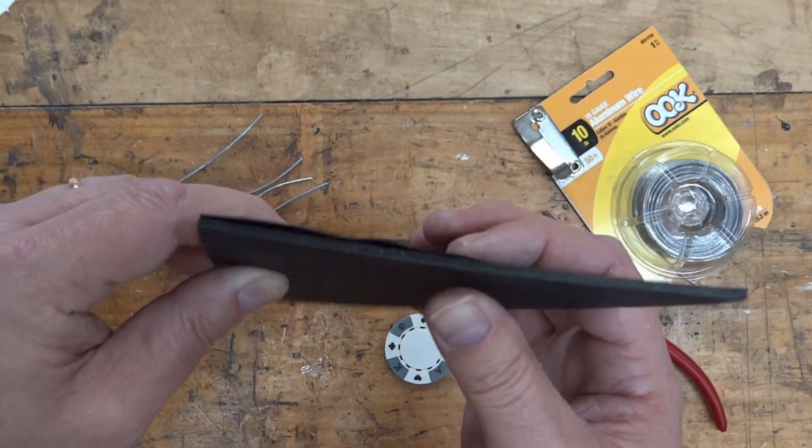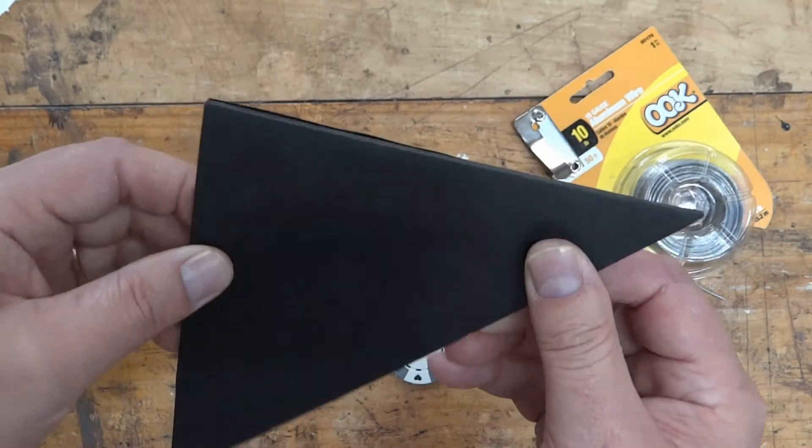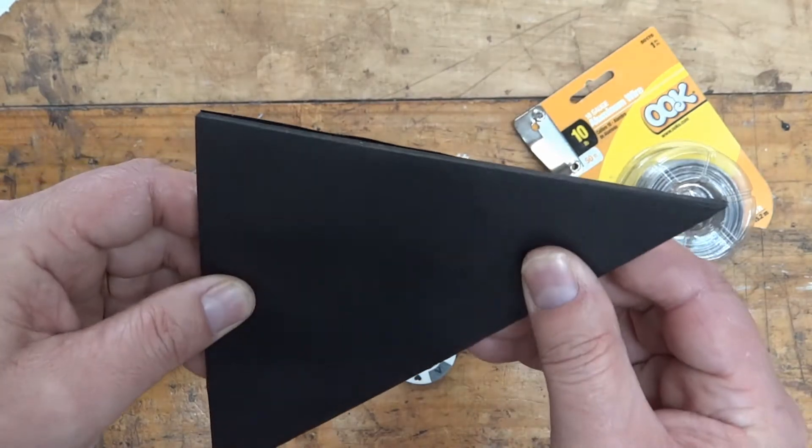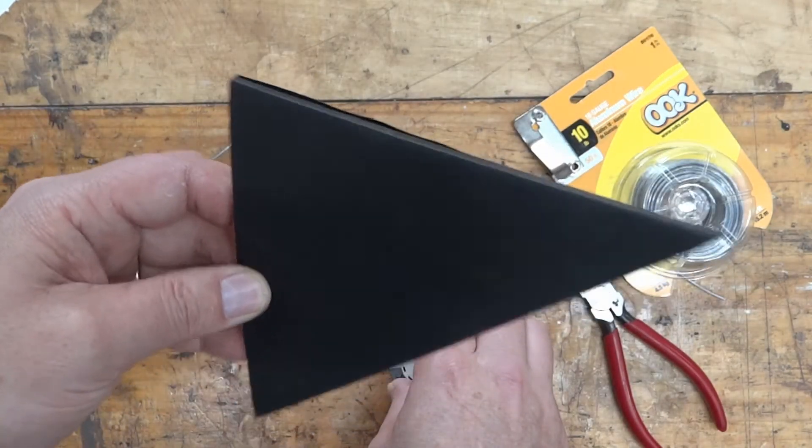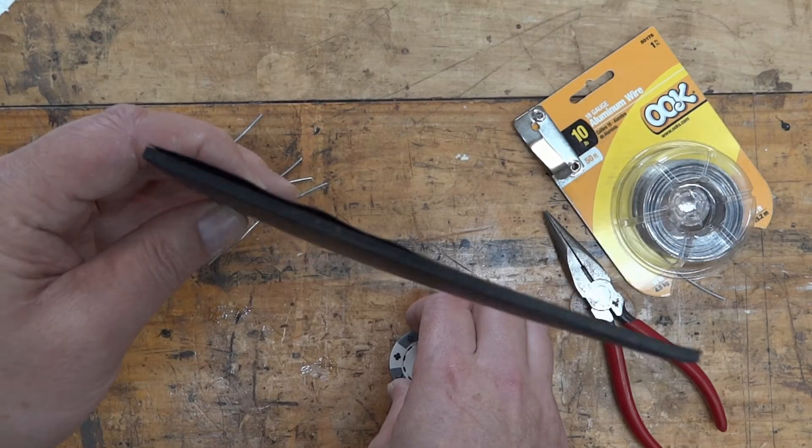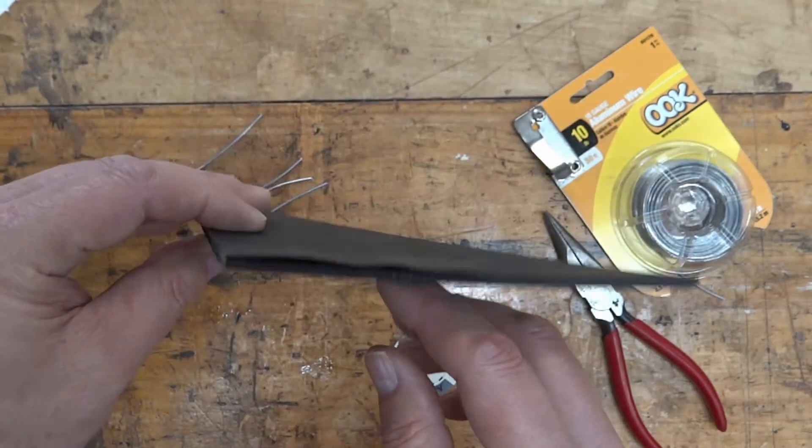But for coins and ribbons and stuff like that, this was sufficient and it's easy to poke the wire through. The quarter inch plywood you're going to need to use a drill bit, but it's the same process.